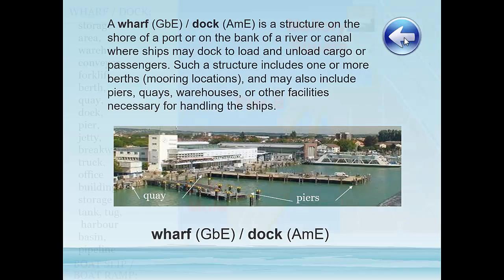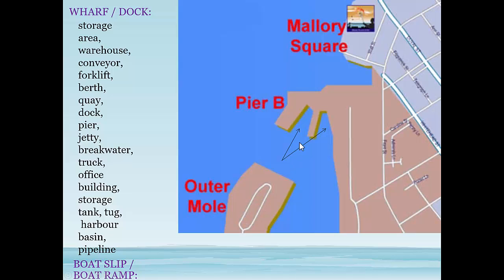So those two terms, wharf and dock in American and British English, mean a general place to load and unload passengers. But if we go back to this picture — a three-sided area of water to moor a ship for loading and unloading cargo — we have the term dry dock. A dry dock could have a gate or a sluice at the end where it's closed off and the water is drained out so that you can work on the outside of the ship on the keel below the waterline.